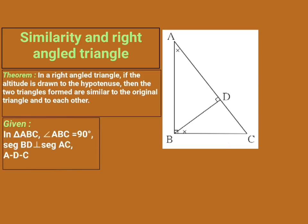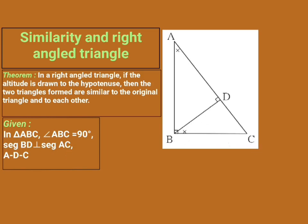Now we write the Given: In triangle ABC, angle ABC equals 90 degrees, segment BD is perpendicular to segment AC, and D lies between A and C.